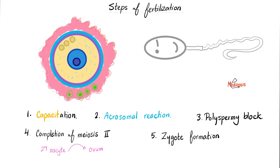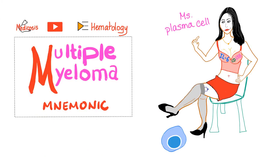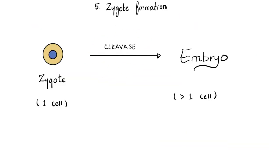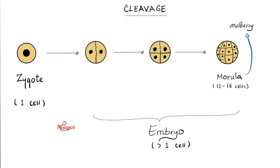After zygote formation, now it's time for cleavage — the thing that takes you from a zygote to an embryo. A zygote has just one cell; we call this unicellular. An embryo is anything more than one cell. So here is the cleavage: zygote, just one, then two cells, then four cells, then the morula, which is between 12 and 16 cells.